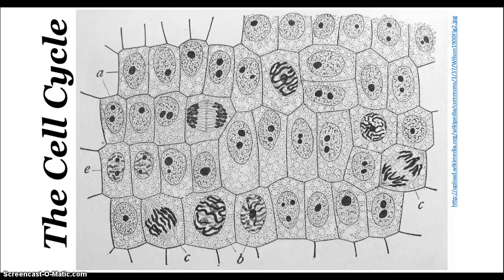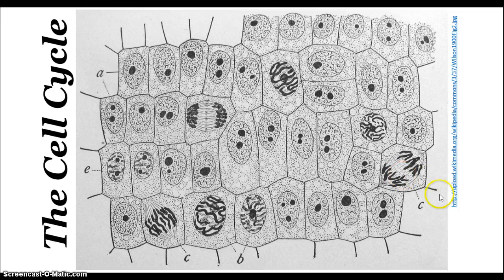Today I want to talk about the cell cycle and cell division — how cells carry out the processes they need to in order to divide, and in order to have the organism carry out the other functions it needs. Here, for example, we're looking at onion root cells, where through cell division the root elongates along this axis so that it can stretch, making new cells to help it accomplish its function.